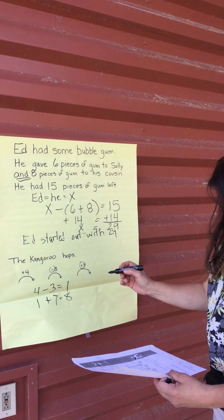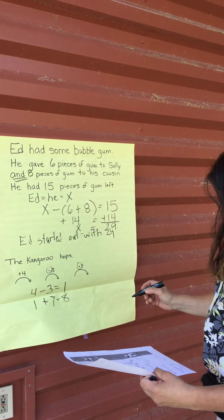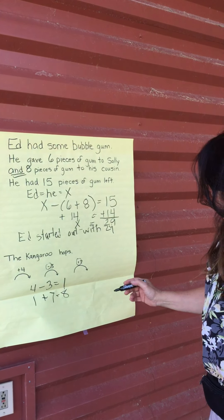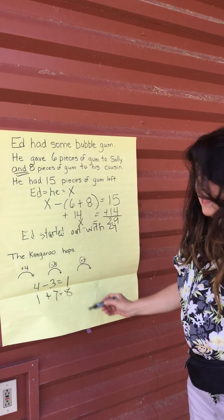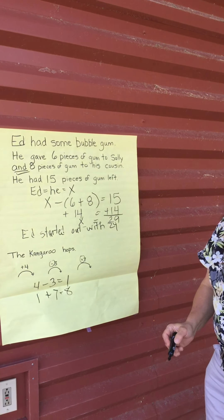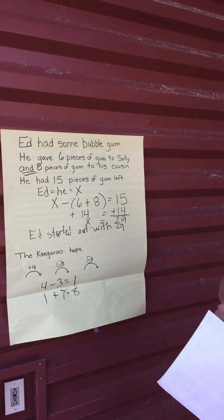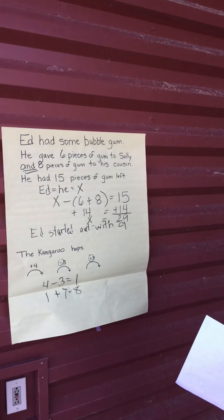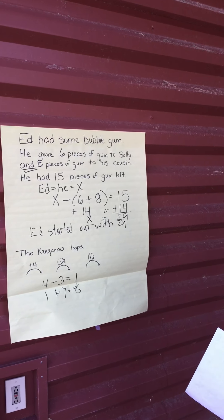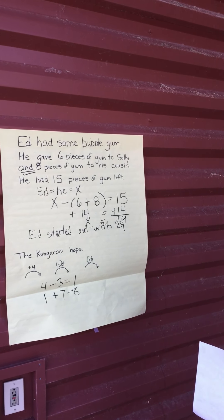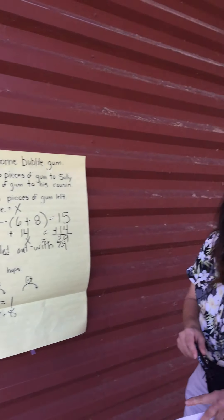So the kangaroo hops eight places. And that's it for your think tank math for this week. Have a great time. Bye bye.